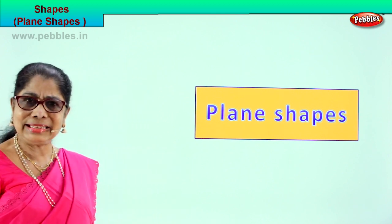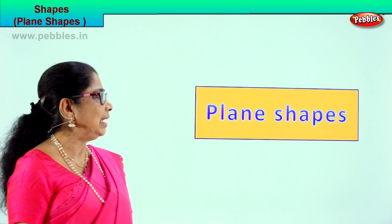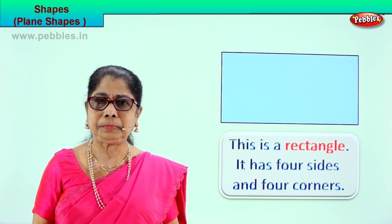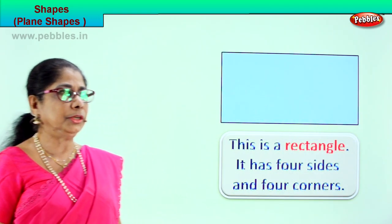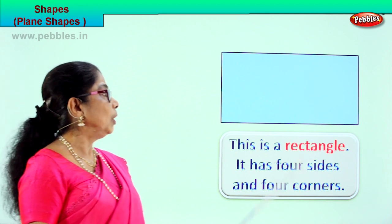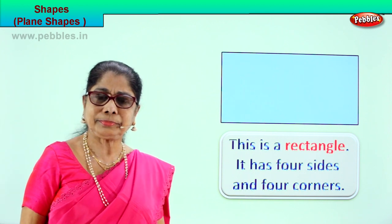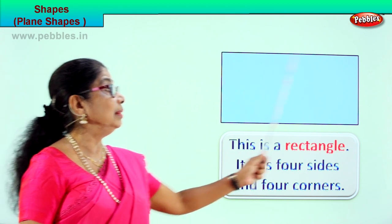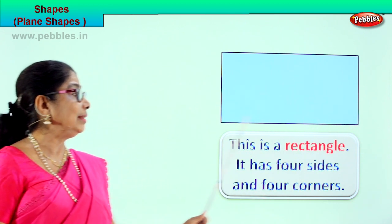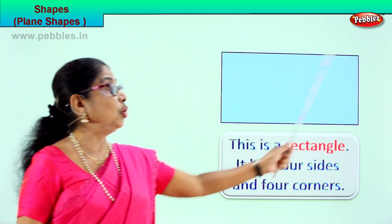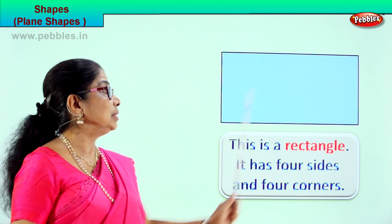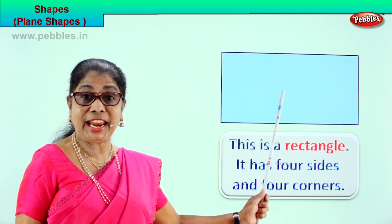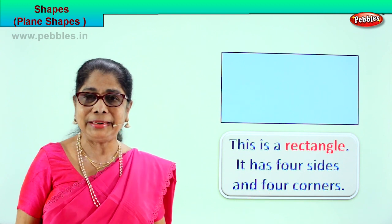Alright! Let's take the first plain shape. What shape is this? Very good — this is a rectangle. It has got two long sides and two short sides. This is a plain shape: rectangle.